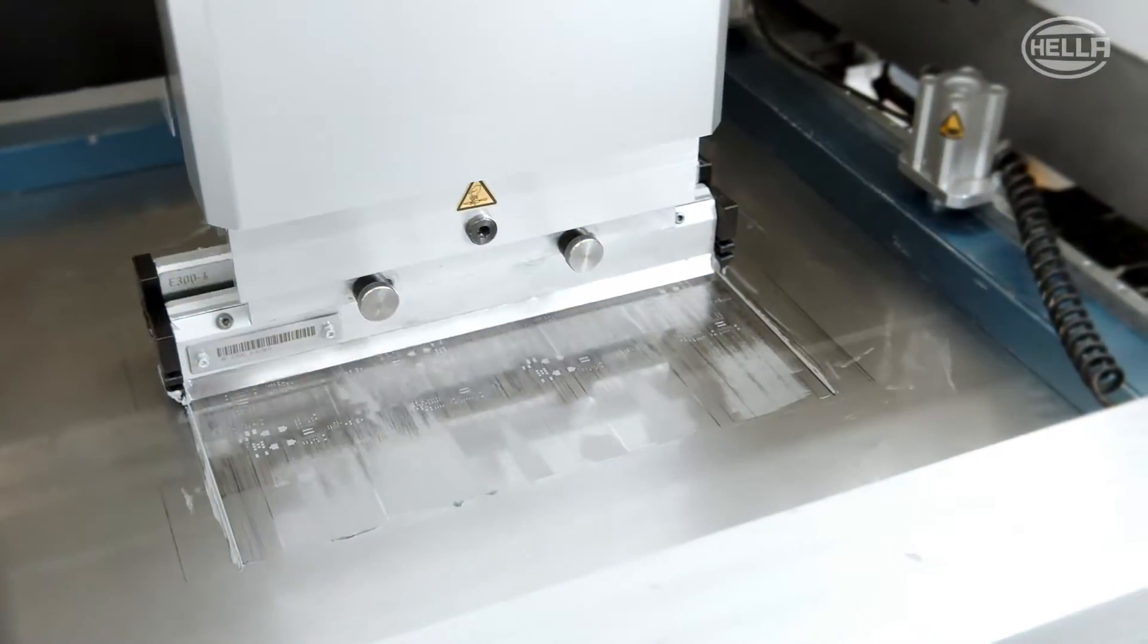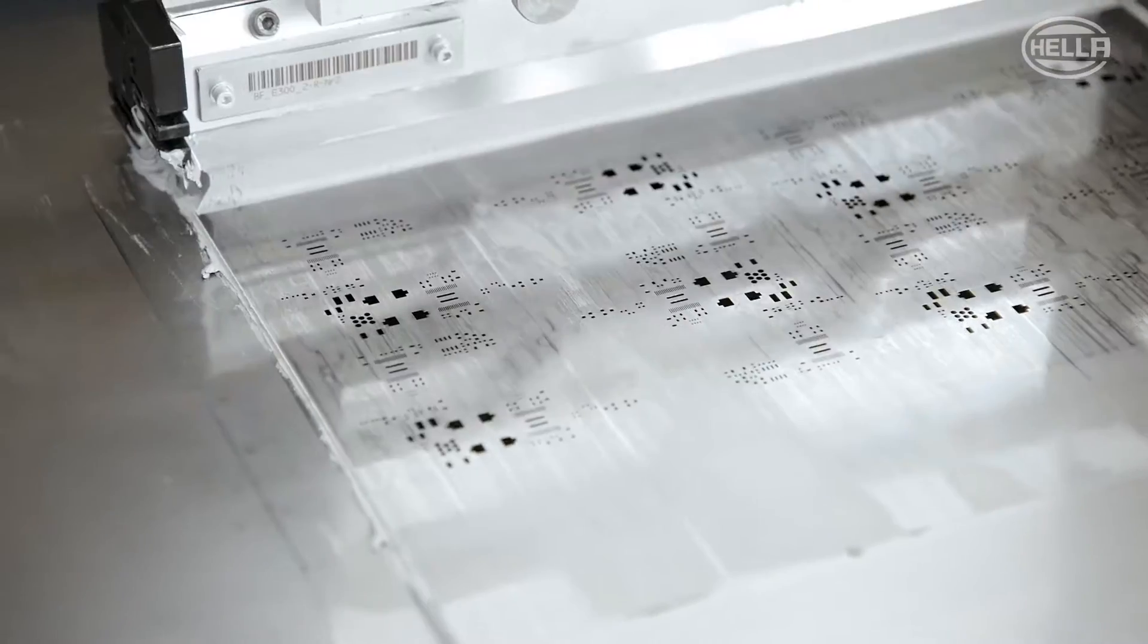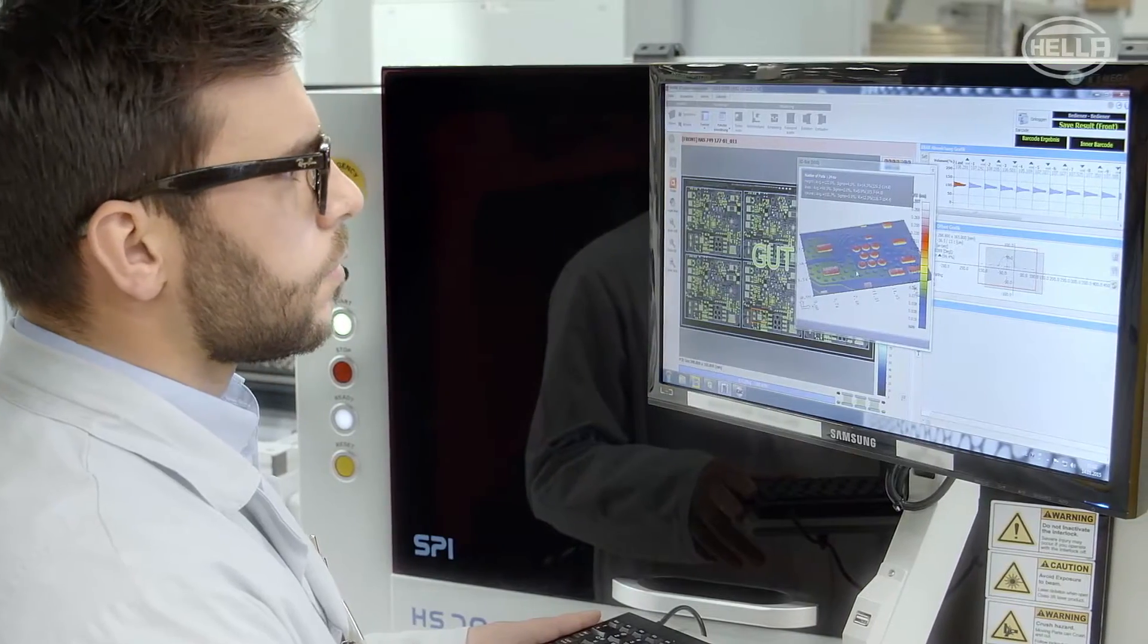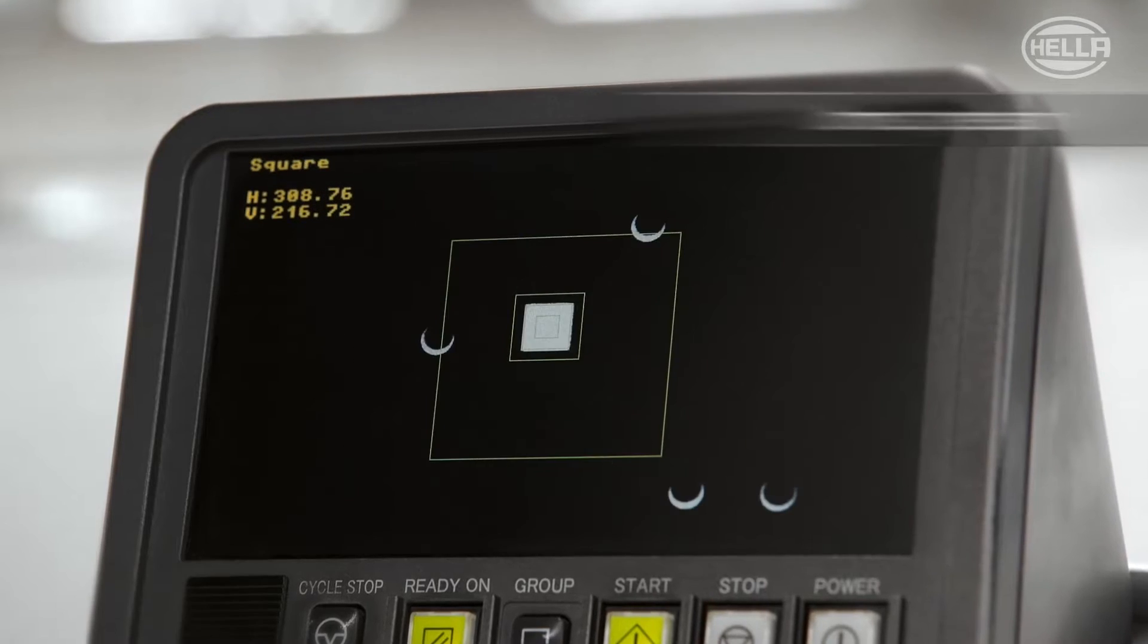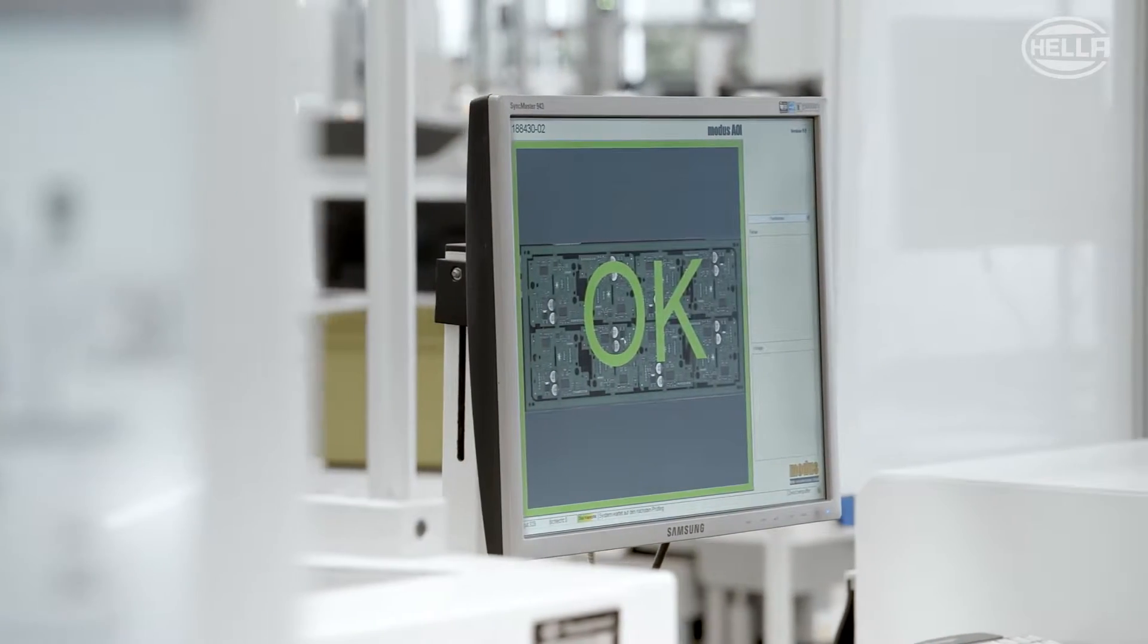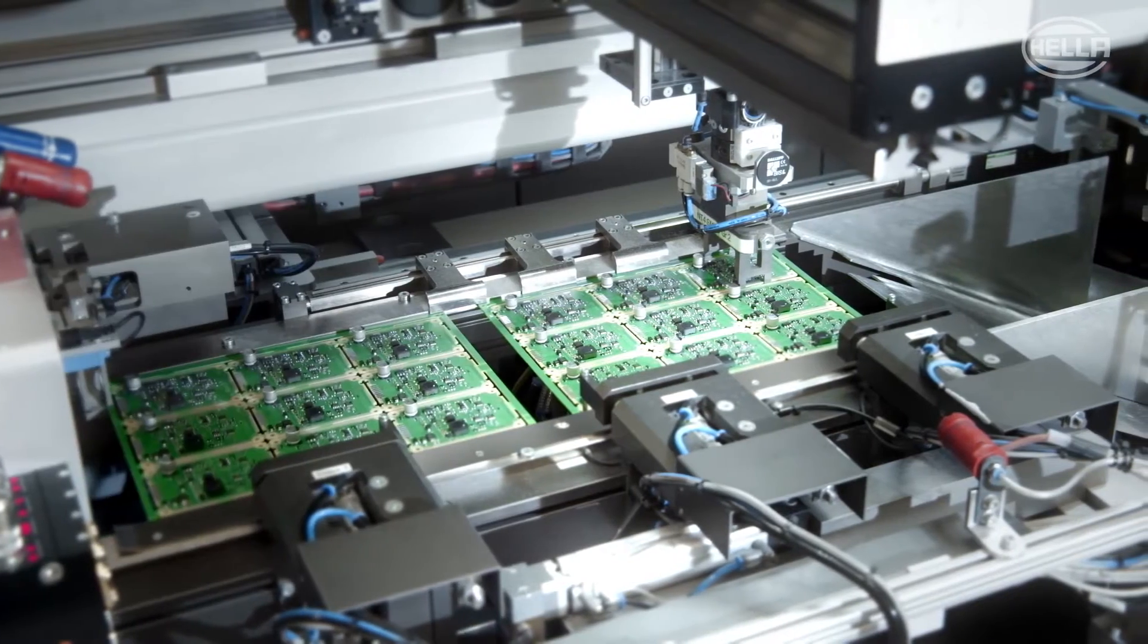The assembled printed circuit boards are the basis for subsequent processing at the plant. Utmost precision and continuous monitoring of processes via inline and in-circuit tests is the key to outstanding quality.